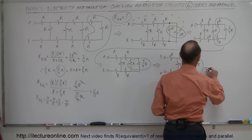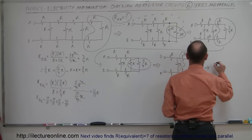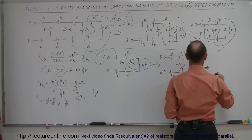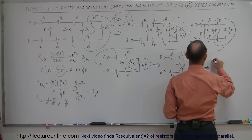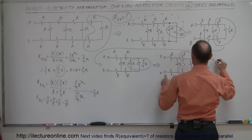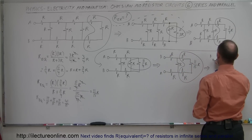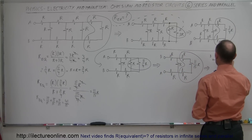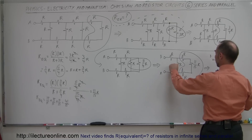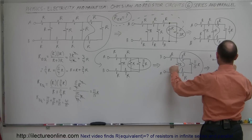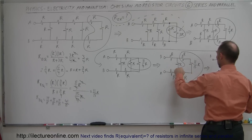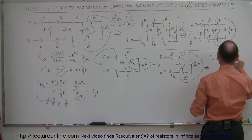So our new circuit will look like this. We have the A and B terminals, and we still have these two resistors. Now those three combined form a single resistor, and we still have this one right there.